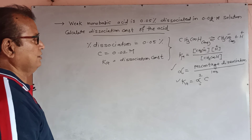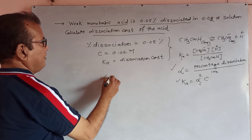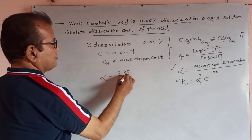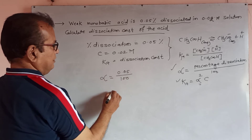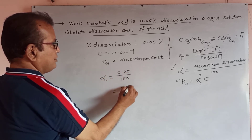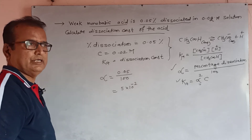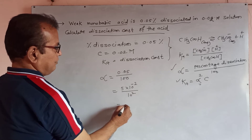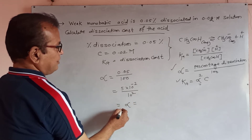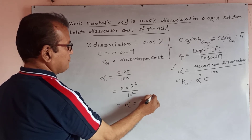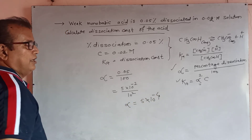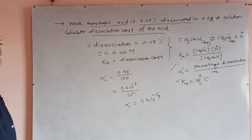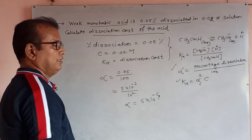We go towards alpha. Alpha equals percentage dissociation divided by 100, which means 0.05% divided by 100. That is 0.05, which means 5 × 10⁻² divided by 10². So alpha becomes 5 × 10⁻⁴. The alpha value is equal to 5 × 10⁻⁴.